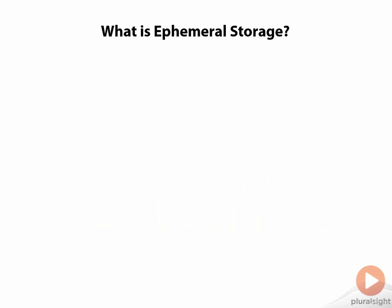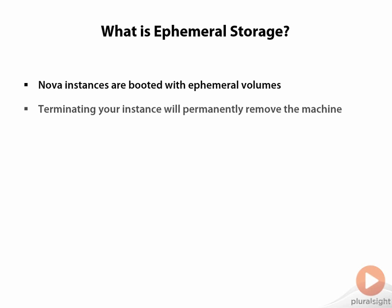Let's start at the beginning. It's good for us to know what ephemeral storage is. It's not often in your day that you get to use the word ephemeral, but now that you're in a cloud environment you'll get to say it all the time. Nova instances are booted with what we call an ephemeral volume. When you terminate a Nova instance it will permanently remove the machine — in effect this ephemeral volume is temporary. The size of an ephemeral volume is chosen by the flavor assigned to it at boot time, and you can expand it as needed down the road, but again when it's terminated it's completely removed.